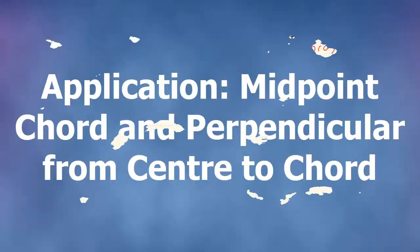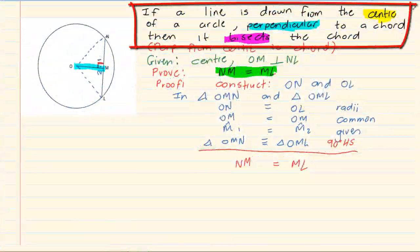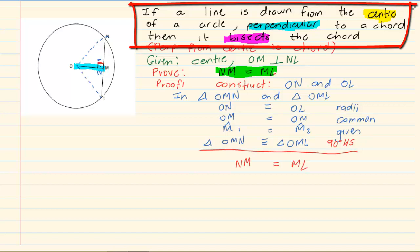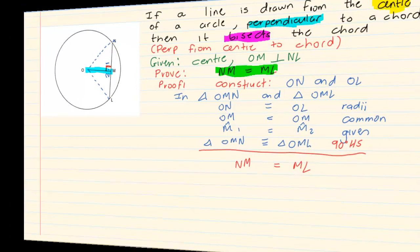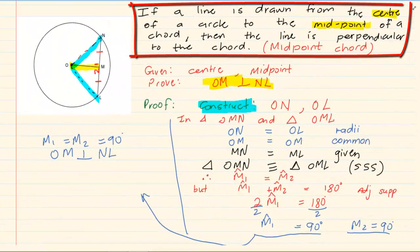Hi and welcome to my maths class. We have previously done the proof where it says that if a line is drawn from the center of the circle then it is perpendicular to the chord and then it bisects the chord. We've done a slight variation which says a similar thing but now you are given different things.